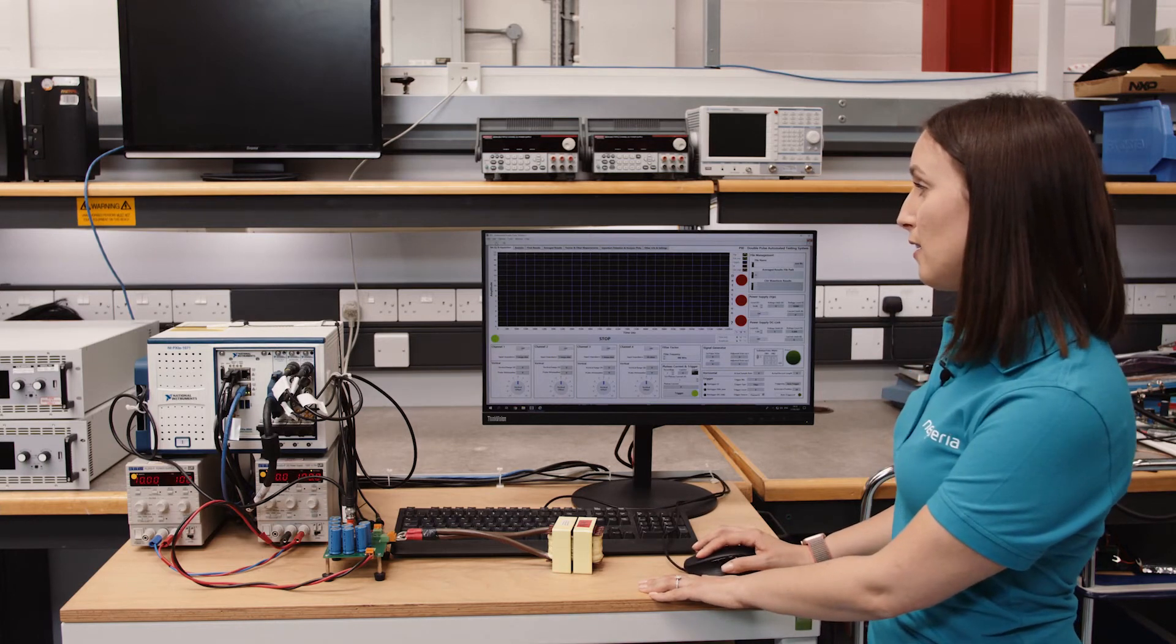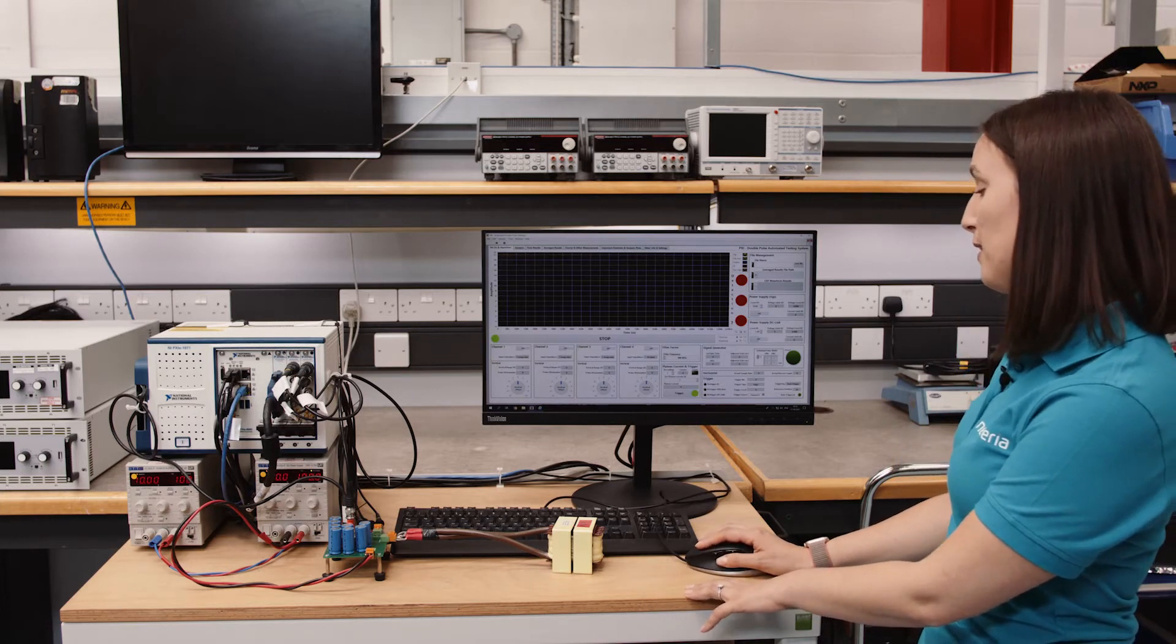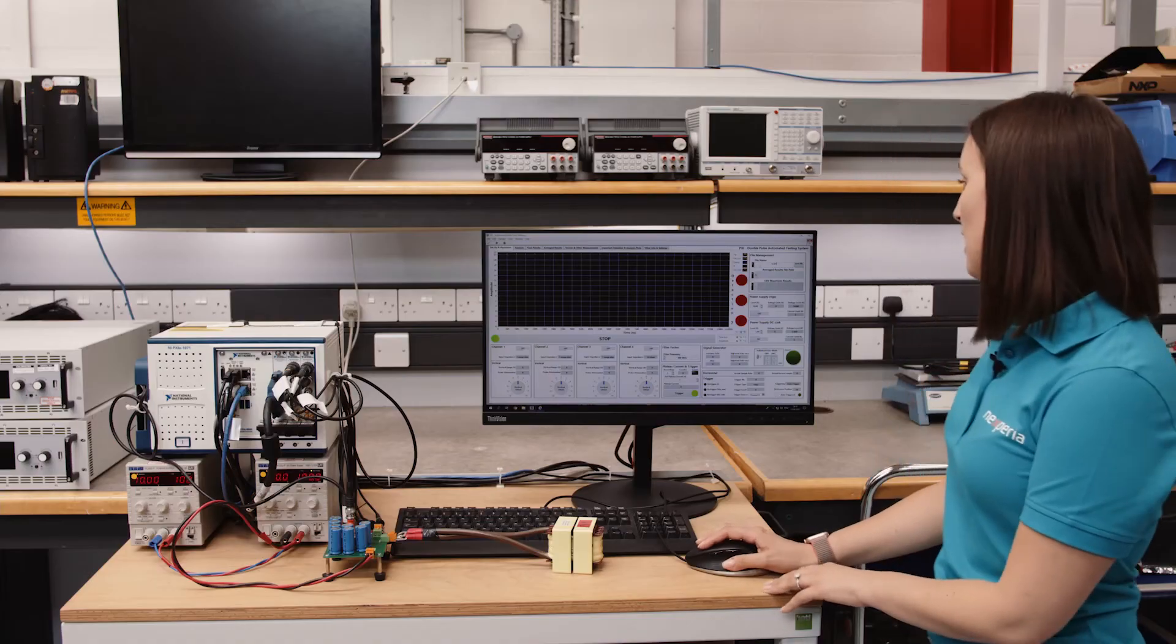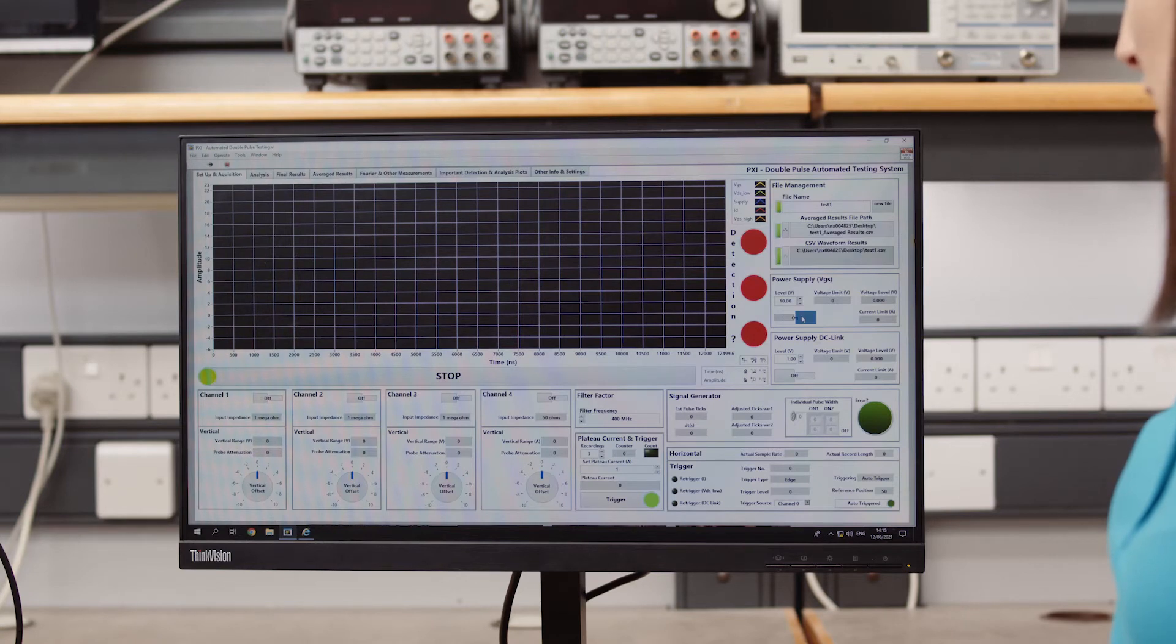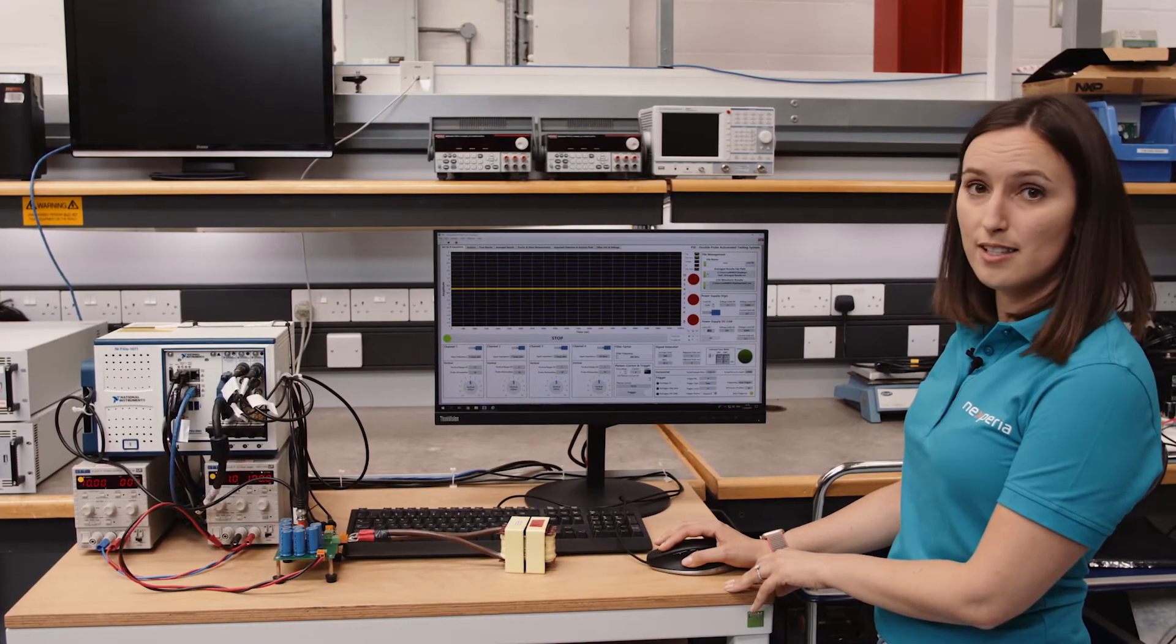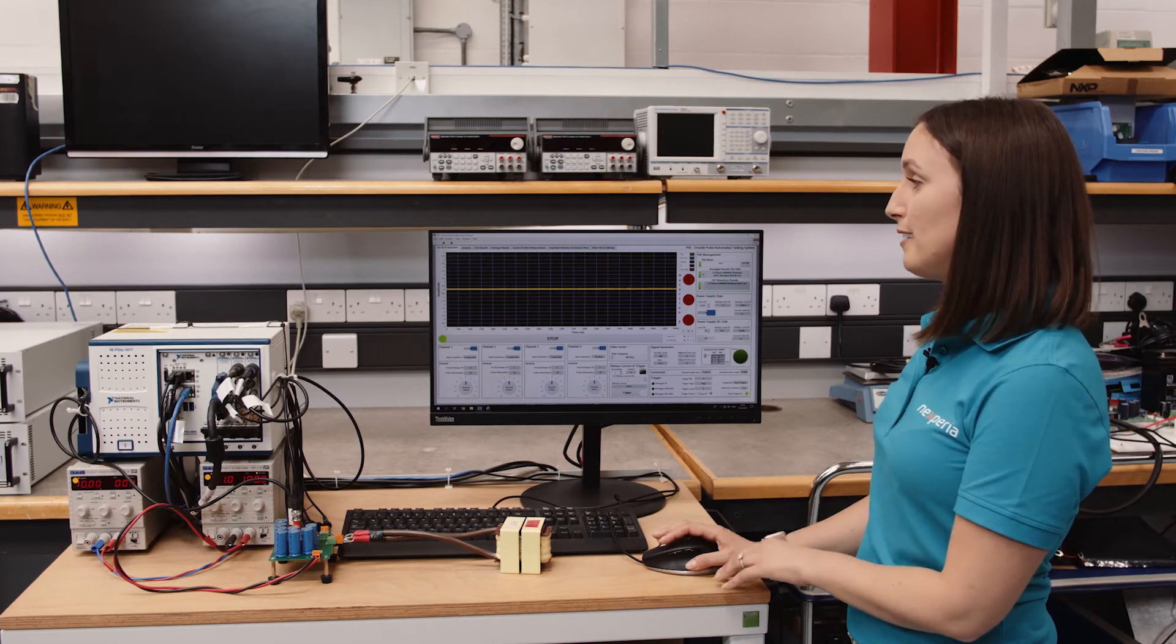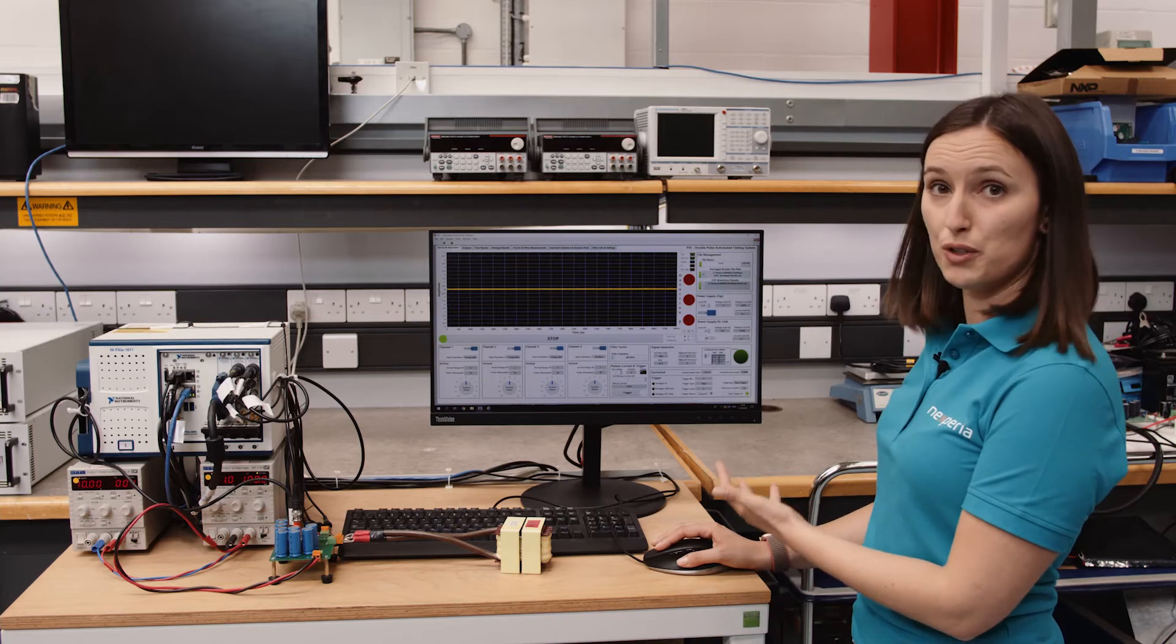We will set the software running and then we will name our file test1. Then we will switch on the gate signal and we will set the VDS supply. We will set it to 20 volts as we normally test it at half of the BVDSS rating of the part, which is 40 volts.